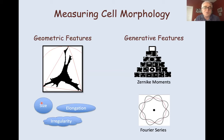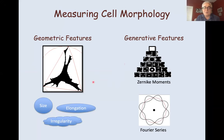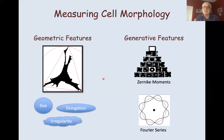The first question we ask is: how do you actually represent the morphology of an irregular object like a cell? There are obvious crafted features we've been using for a long time — measures of size, elongation, irregularity of the perimeter — which we call geometric features. The caveat is that these geometric features are handcrafted, so they're information-rich but may be biased and don't contain all the information. So is there an unbiased way of actually representing cell shape? We use what in the field is called generative features.